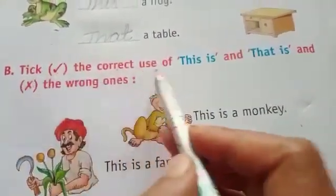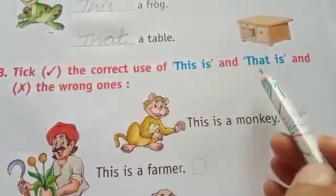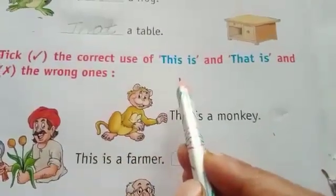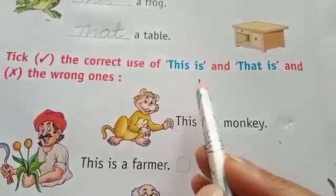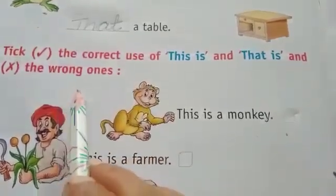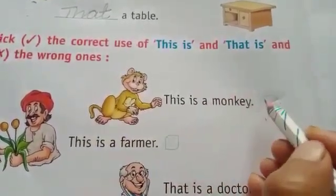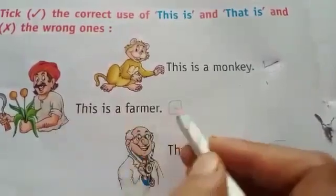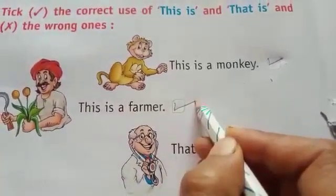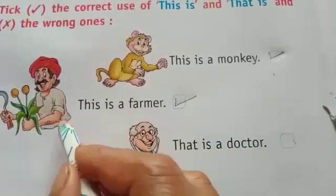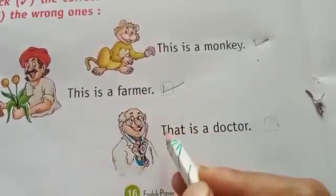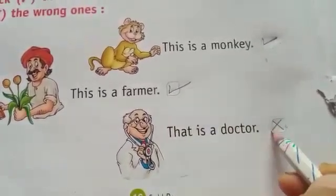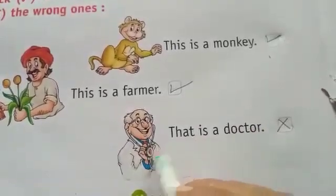Next — tick the correct use of 'This is' and 'That is', and cross the wrong ones. जो सही है उसमें सही टिक लगाना है, जो wrong है उसमें cross करना है। This is a monkey — monkey हमारे पास है, तो यह correct है। This is a farmer — farmer हमारे पास है, तो यह correct sentence है। नज़दीक के लिए हम 'This' का यूज करते हैं। That is a doctor — यह sentence incorrect है, क्योंकि doctor हमसे दूर नहीं है, पास है। इसलिए यह sentence wrong है।